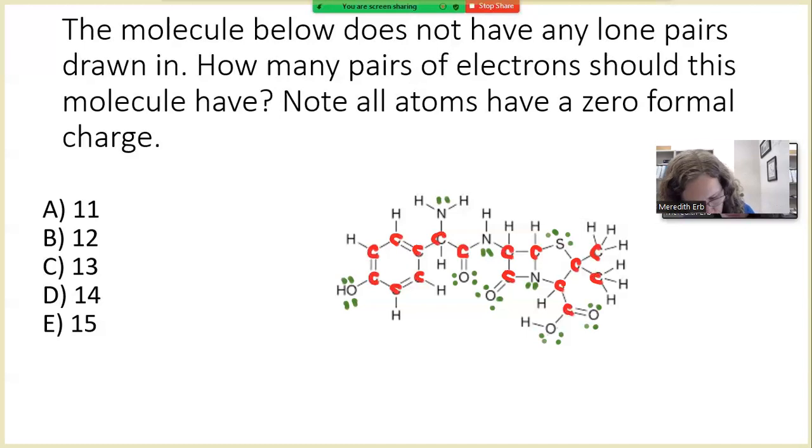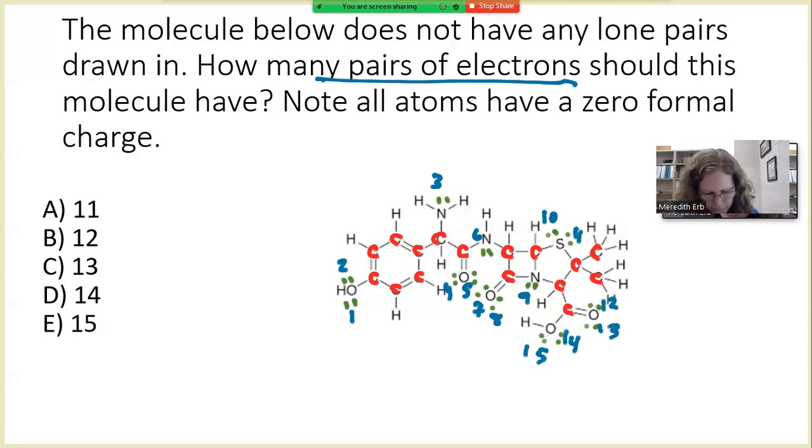So let's go ahead and count up our lone pairs. This is how many pairs of electrons, so we're looking for the pairs: 1, 2, 3, 4, 5, 6, 7, 8, 9, 10, 11, 12, 13, 14, 15. So the answer to this question should be E.